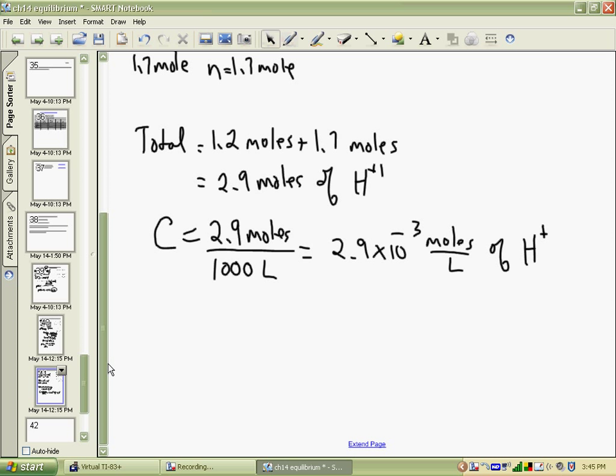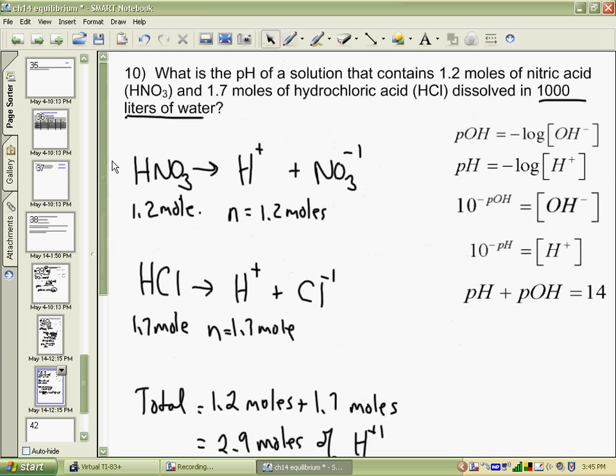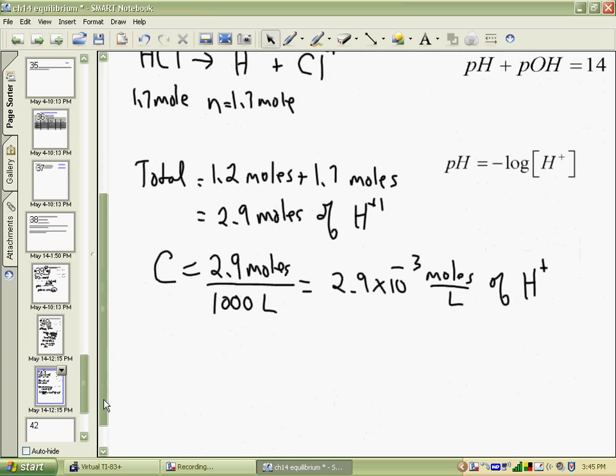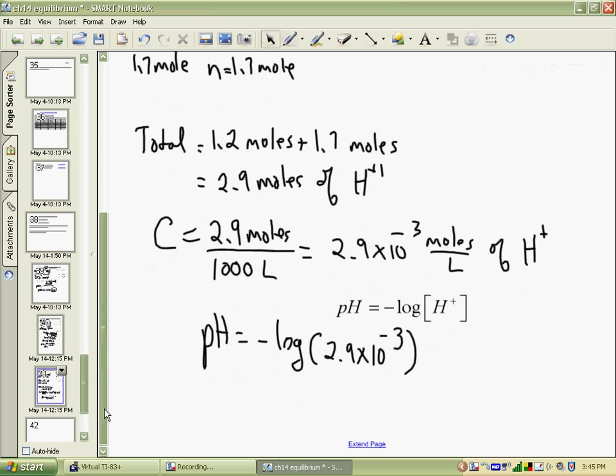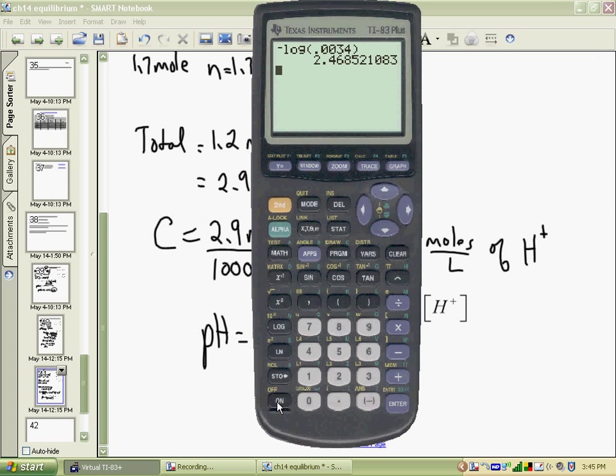So how are we going to get pH? We know that the pH is negative log of the hydrogen ion concentration. So pH is negative log of 2.9 times 10 to the minus 3. We're ready to go to our calculator. Turn it on, negative log of 2.9 exponent, negative 3, and the bracket. And you get 2.54 is our pH. So we've worked that one out. Hope you've enjoyed this.